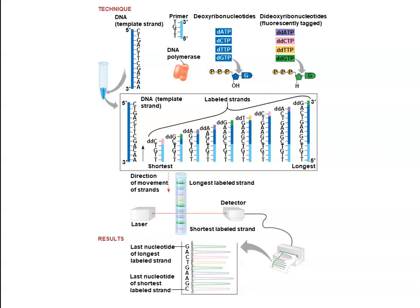The DNA template strand is replicated, producing different-size labeled strands because the ddNTPs terminate replication at different positions. Since each ddNTP carries a different fluorescent tag, we can distinguish them from one another and read the sequence from smallest to largest fragment, identifying what was present on the original template strand.